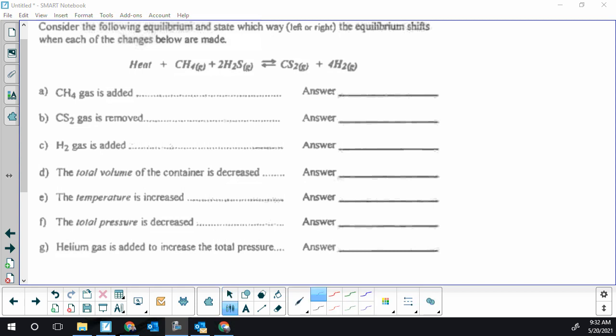This is a tutorial video to review predicting which way an equilibrium system will shift when a stress is applied. The reaction we're going to be analyzing is an endothermic reaction where heat plus methane plus dihydrogen sulfide produces carbon disulfide and hydrogen gas. The first question is when methane is added.